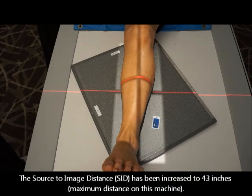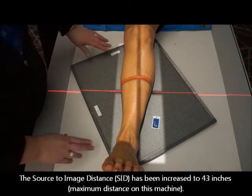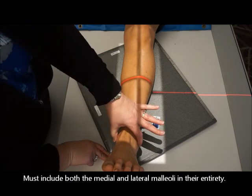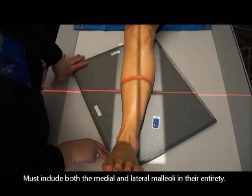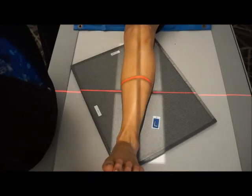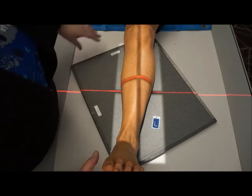Now I have increased my SID on this to 43 inches to accommodate the length of the long bone. We want to make sure that the malleoli are parallel to our image receptor, perpendicular to our central ray.